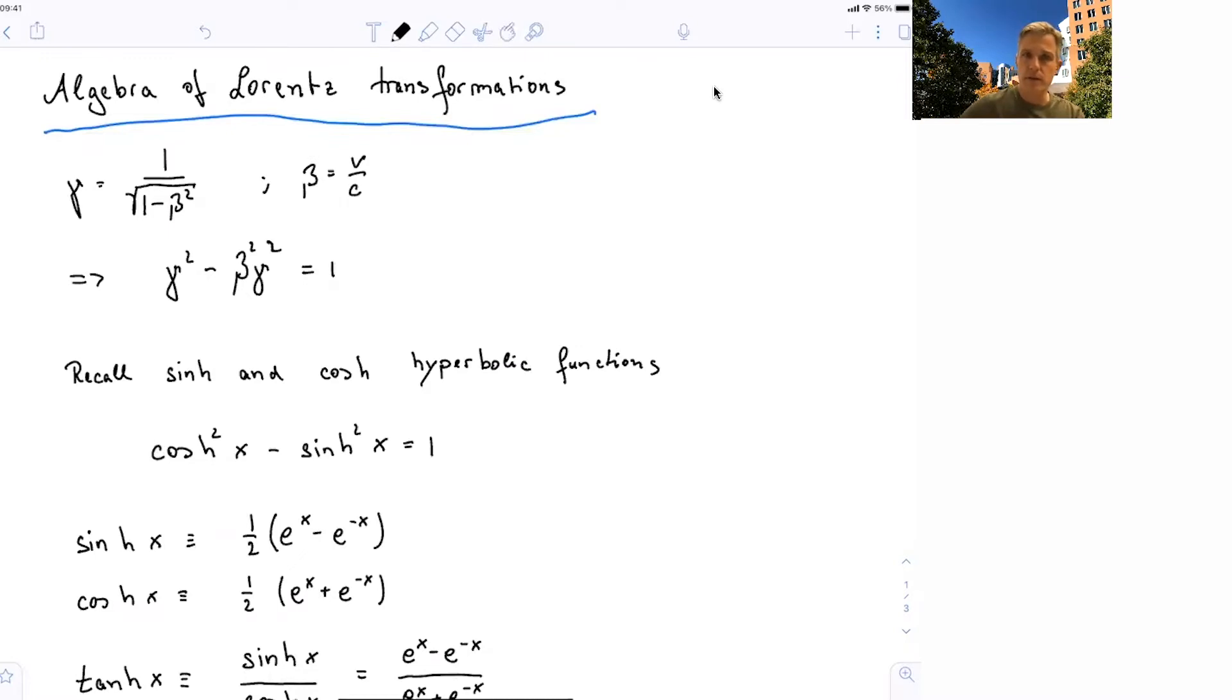So we want to talk about the algebra of Lorentz transformations. We have seen that our gamma factor is 1 over square root 1 minus beta squared, with beta equal to the relativistic velocity v over c. And we can rewrite this as gamma squared minus beta squared gamma squared equals 1.